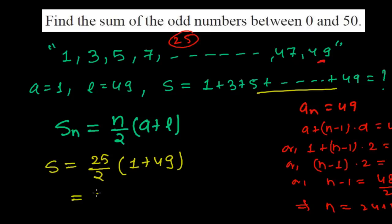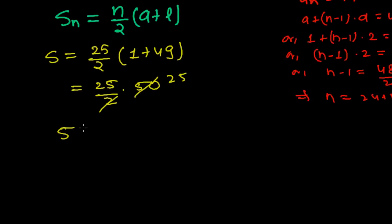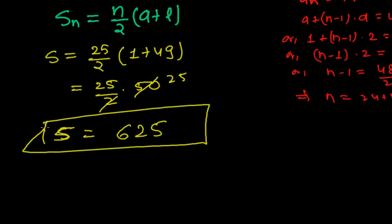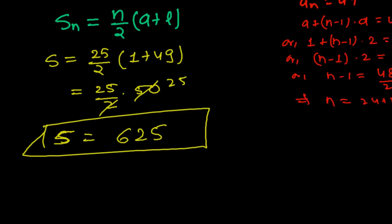25 divided by 2 times 1 plus 49, that is 50. So 25 times 50 divided by 2. Therefore I got 25 times 25, which is of course 625. So we got the sum of the odd numbers between 0 to 50 is 625.